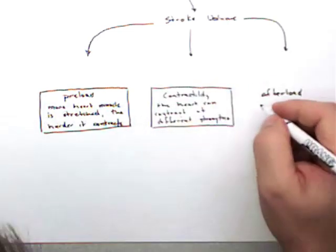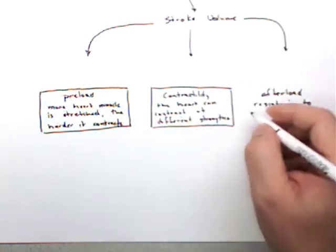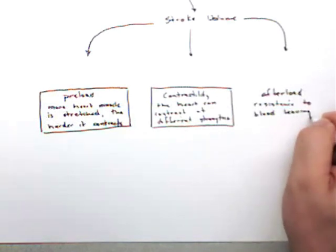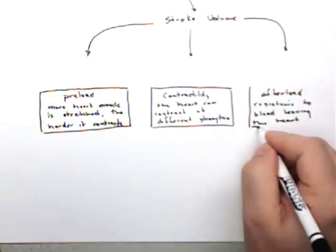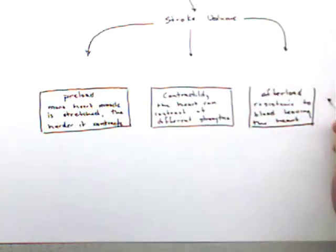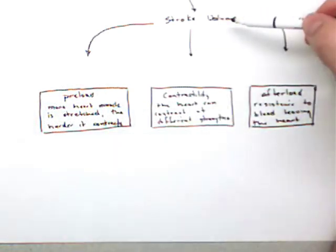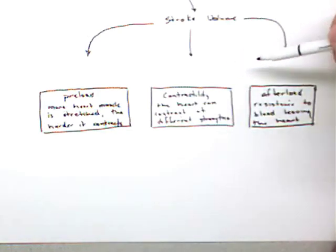Afterload is resistance to blood leaving the heart. So the heart is trying to pump blood out—what are the things that are pushing back? That's what afterload is. And again, the theory here is that the heart is trying to pump out a stroke volume. If that blood is pushing back, that's going to decrease the stroke volume, and that's afterload. I think we'll go back through this again, and this time we'll point out some of the things that affect preload, contractility, and afterload.